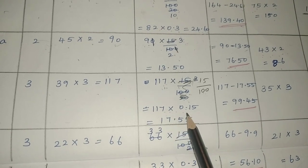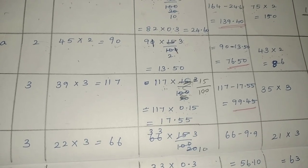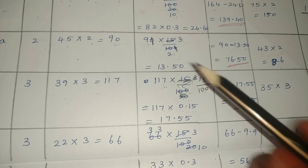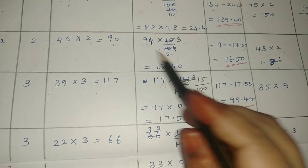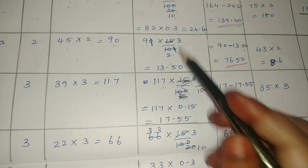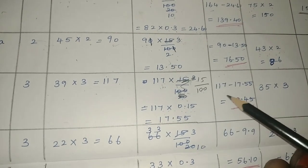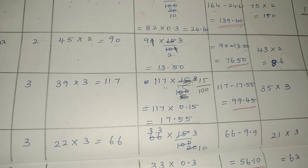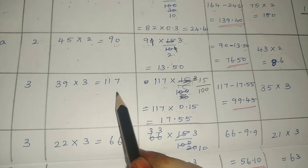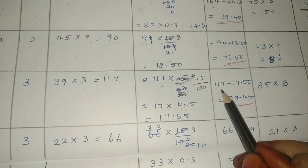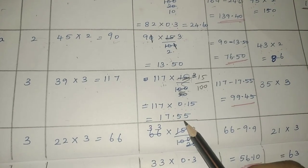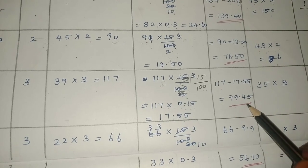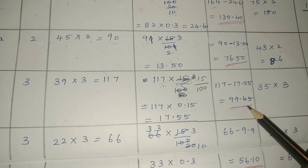Applying 15% offer: 117 into 0.15 equals 17.55. Normal price ₹117 minus offered price ₹17.55, subtracting gives ₹99.45 — shop 1 amount.